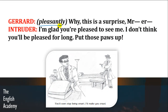Gerard says pleasantly: 'Why, this is a surprise. Mr. A.' Ab Gerard ko nahi pata yeh kaun hai, yeh ek stranger hai. Lekin phir bhi Gerard badi khushi ke saath badi smile ke saath usse kehta hai — vaah kya surprise hai — aur phir woh usse 'Mr. A' karke address karta hai kyunki usse uska naam nahi pata, woh jaanna chahta hai ke aadmi kaun hai.